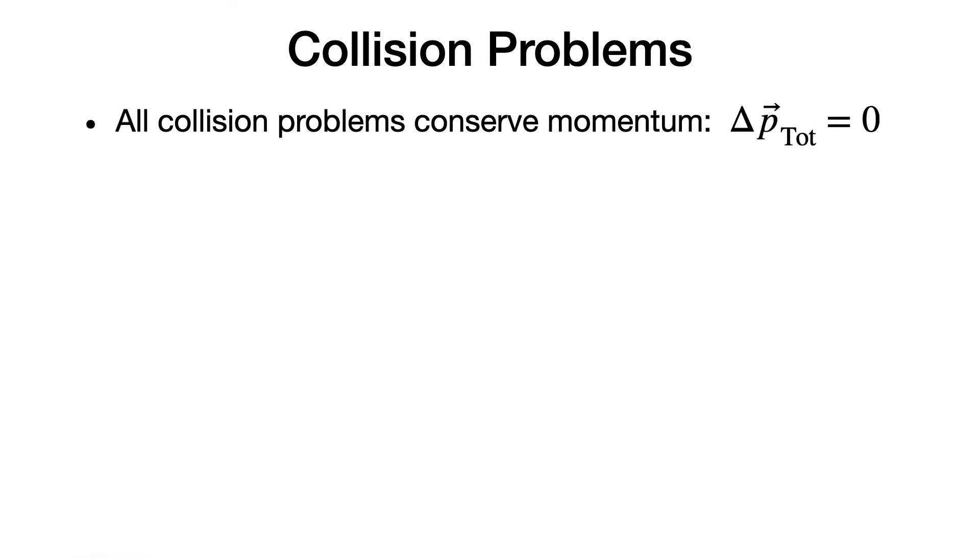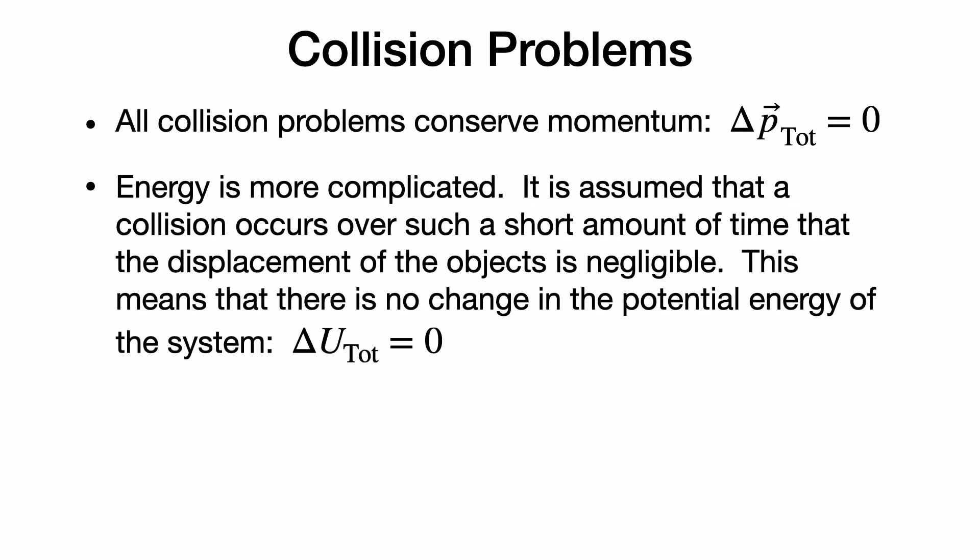All collision problems conserve momentum. However, energy is a little bit more complicated. It is assumed that a collision occurs over such a short amount of time that the displacement of the objects is negligible during that interval. This means that there is no change in the potential energy of the system, so the change in the total kinetic energy of the system will be related to the work done by non-conservative forces.